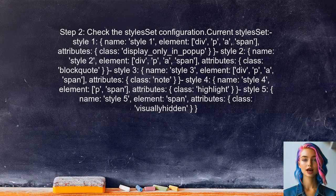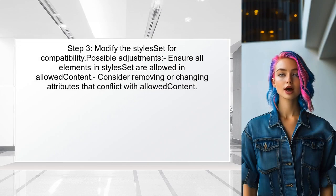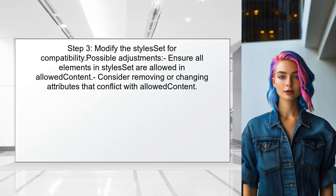Next, the user should check the style set configuration. The style set defines the styles available in the editor and it must align with the allowed content settings to function properly. The user should modify the style set to ensure that all styles are compatible with the allowed content settings. This may involve adjusting the elements or attributes used in the styles.